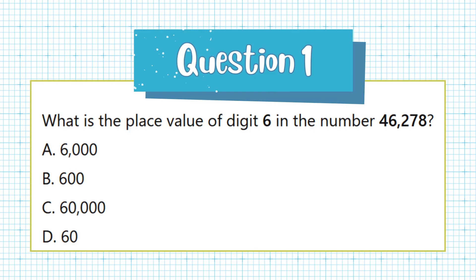Question 1. What is the place value of digit 6 in the number 46,278? a. 6000, b. 600, c. 60,000, d. 60.